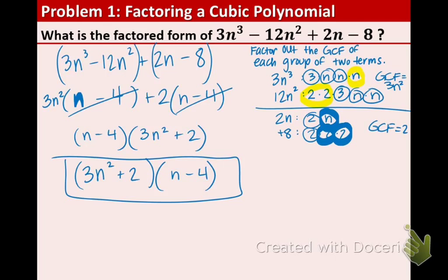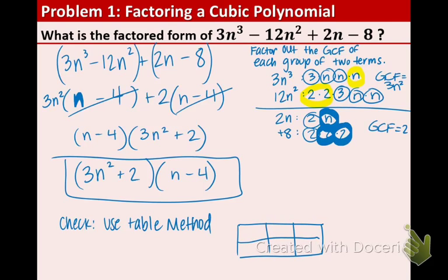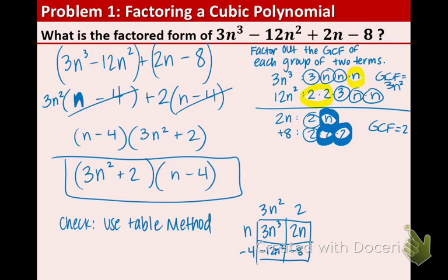Now, if you wanted to check, I will direct you to the table method just in case you are unsure of your final answer. The table method would just be what we talked about a few sections ago. So, you would put your answer on the side. So, we would have three n squared and two n minus four. I took what I boxed and just put it in the table. And, then, you just multiply. So, you get three n to the third, two n, negative twelve n squared, and negative eight. Rewrite that in standard form, which means biggest exponent to smallest. And, there you have it. This is the original problem. Three n to the third minus twelve n squared plus two n minus eight. You can pause here if you need to catch up. Otherwise, we will go on to example two.